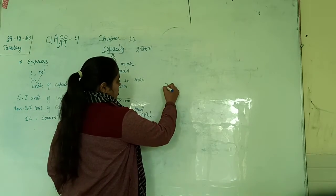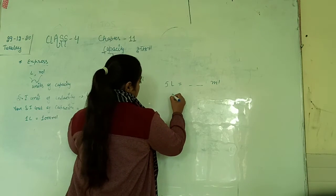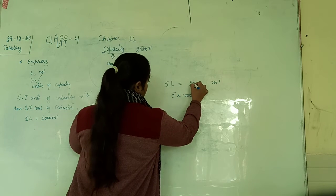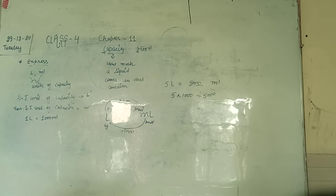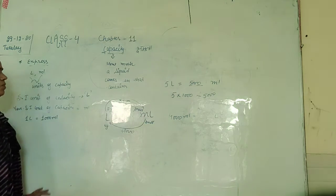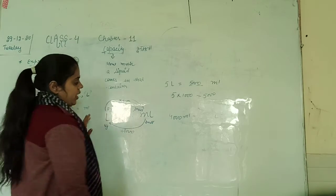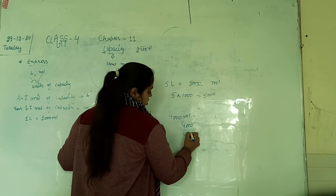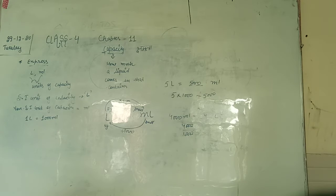Let's see one question: 5 litre equals to how many millilitre? Litre to millilitre — multiply by 1000. So 5 × 1000 = 5000 millilitre. Next: 4000 millilitre equals to how many litre? Millilitre to litre — divide by 1000. Three zeros cut by three zeros, so 4000 ÷ 1000 = 4 litre. This is the way to convert litre to millilitre and millilitre to litre.